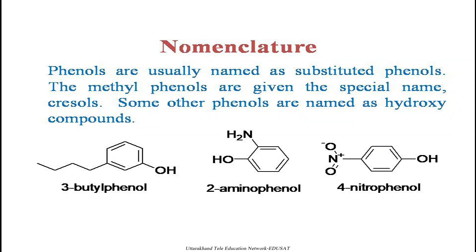The first example is 3-butylphenol. Looking at this compound, at the third position from the functional group OH — first carbon, second carbon, third carbon — on the third carbon we have a butyl group. Therefore, the name of this compound is 3-butylphenol. The second compound has an amino group at the second position relative to the OH group. This is known as 2-aminophenol.